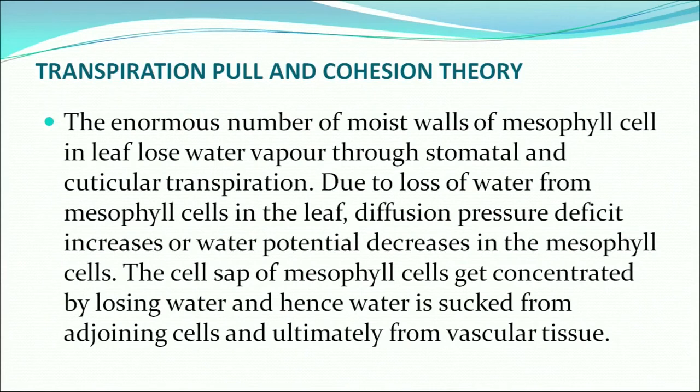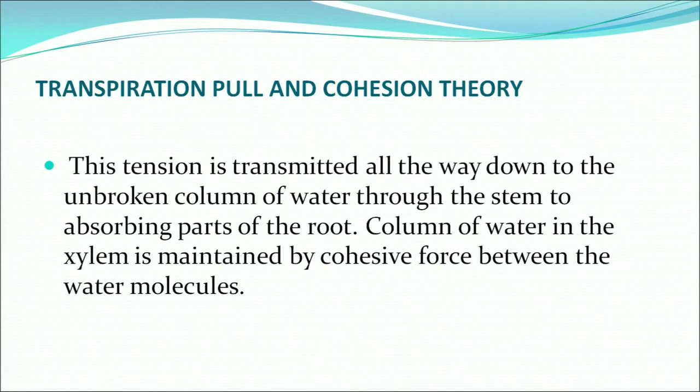How does transpiration occur? If there is absorption, there must also be a loss of water. Transpiration occurs because of the enormous number of moist walls of mesophyll cells, which lose water vapor through stomatal and cuticular transpiration. Due to this water loss, the diffusion pressure deficit increases and water potential decreases in the mesophyll cells. The cell sap of mesophyll cells becomes concentrated, and water is sucked from adjoining cells and ultimately from vascular tissue. This transpiration pull, explained by the cohesion theory, transmits tension all the way down an unbroken column of water through the stem to the absorbing parts of the root, maintained by cohesive forces between water molecules.